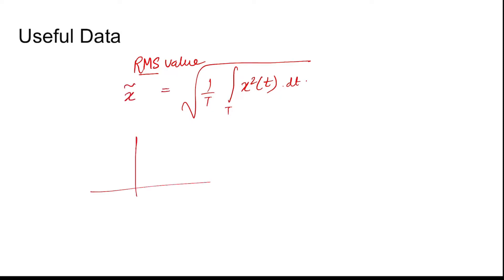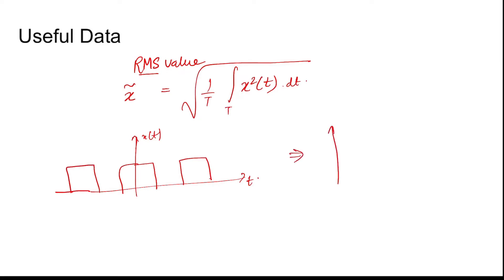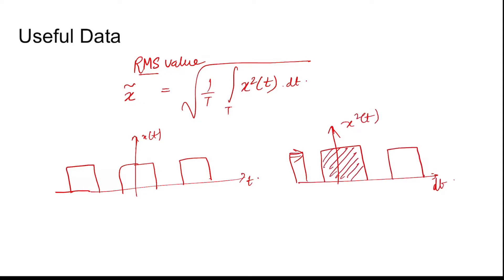For a signal x(t), you find the square of the signal — it is a periodic signal. You first find the square of the signal, then find the area under the graph of the squared signal over a time interval equal to one time period T. You take the mean by multiplying by one over T, and after that you take the square root to get the RMS value.